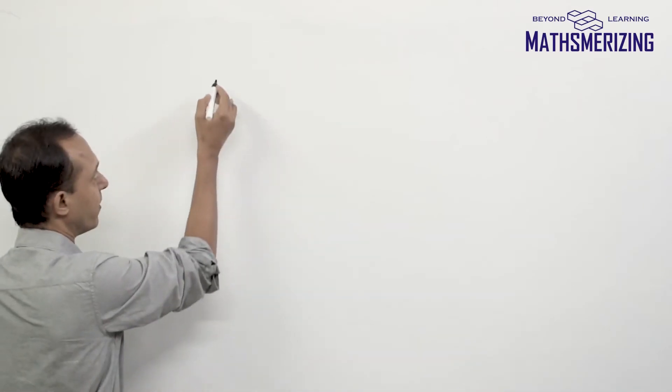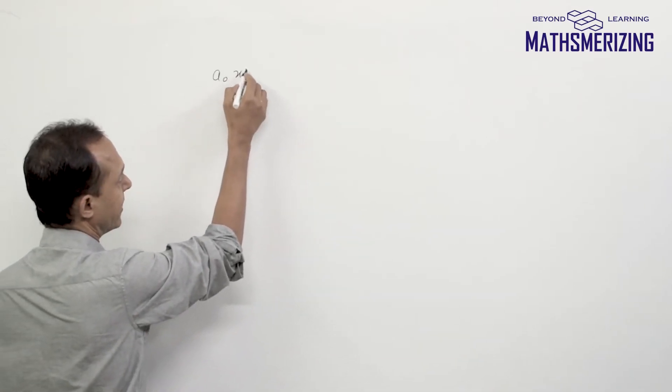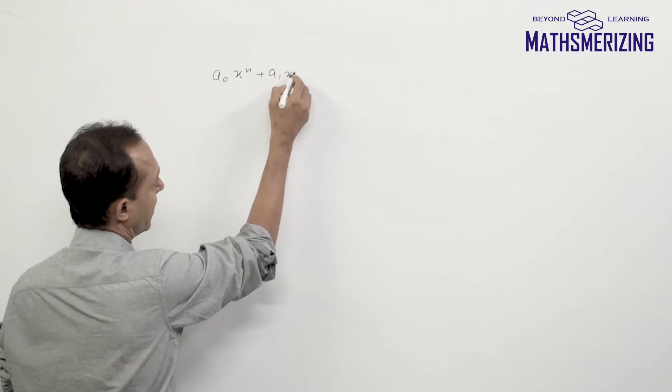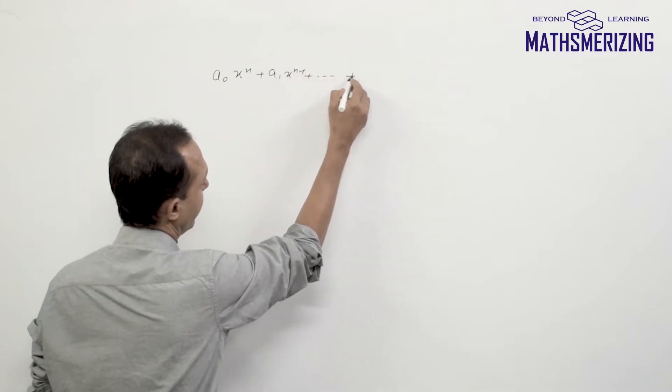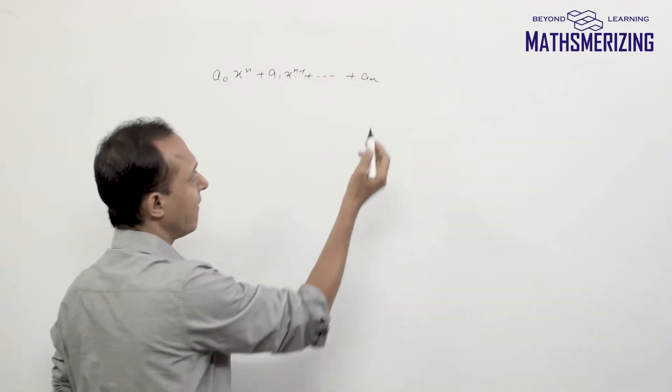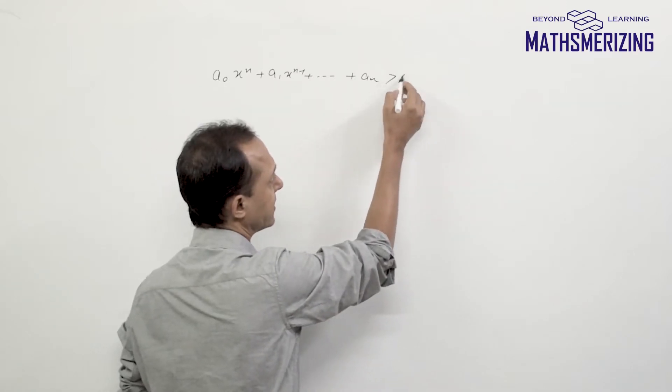I can write any polynomial as a_naught x to the power n, a_1 x to the power n minus 1, and then it goes up to a_n, with an inequality sign.